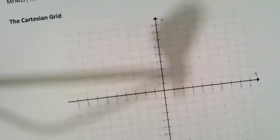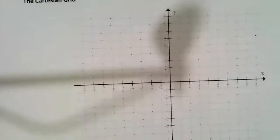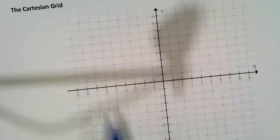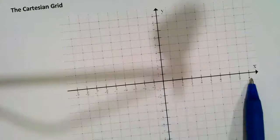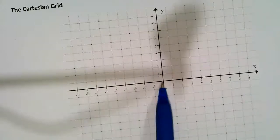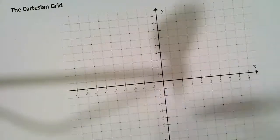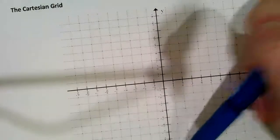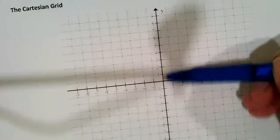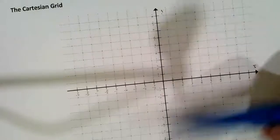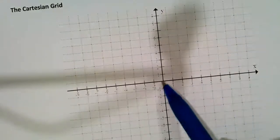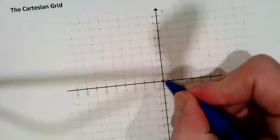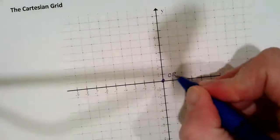The Cartesian grid, you've seen this before, has an x-axis, which is like a number line with negative numbers, zero, up to positive numbers. And the y-axis is like a vertical number line, again starting at zero going up and then negative numbers. And the point where the two axes intersect has a special name, it's called the origin.